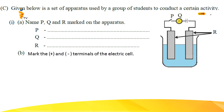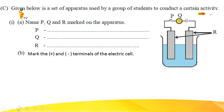Given below is a set of apparatus used by the group of students to conduct the above activity — to check the conductivity of electricity through aqueous solutions. The setup uses a beaker filled with an aqueous solution, with two carbon rods immersed in it. Carbon is a non-metal, but the allotropic form used here is graphite, which does conduct electricity. The circuit also includes connecting wires, a switch, a bulb, and two dry cells (battery). These are marked as P, Q, and R.